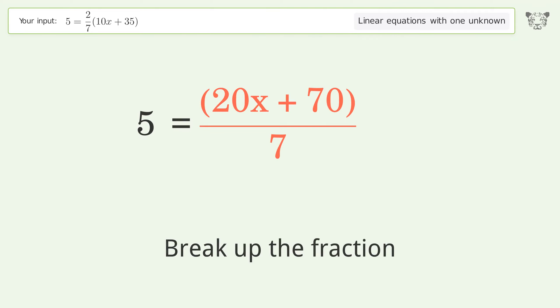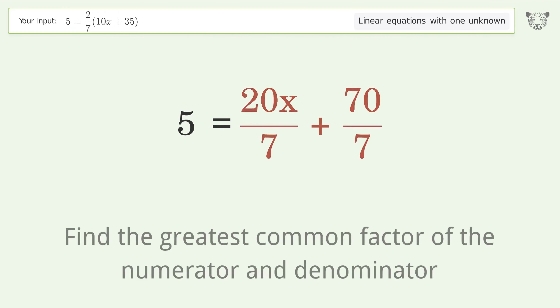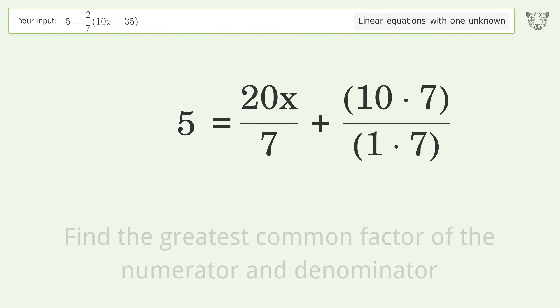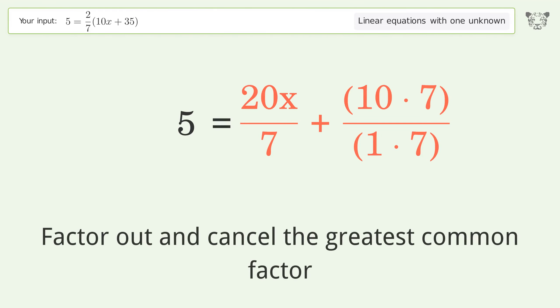Break up the fraction. Find the greatest common factor of the numerator and denominator. Factor out and cancel the greatest common factor.